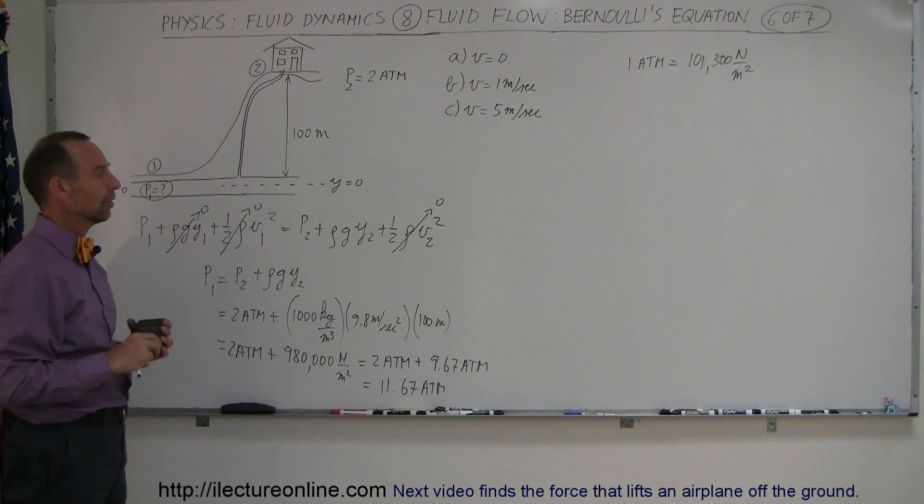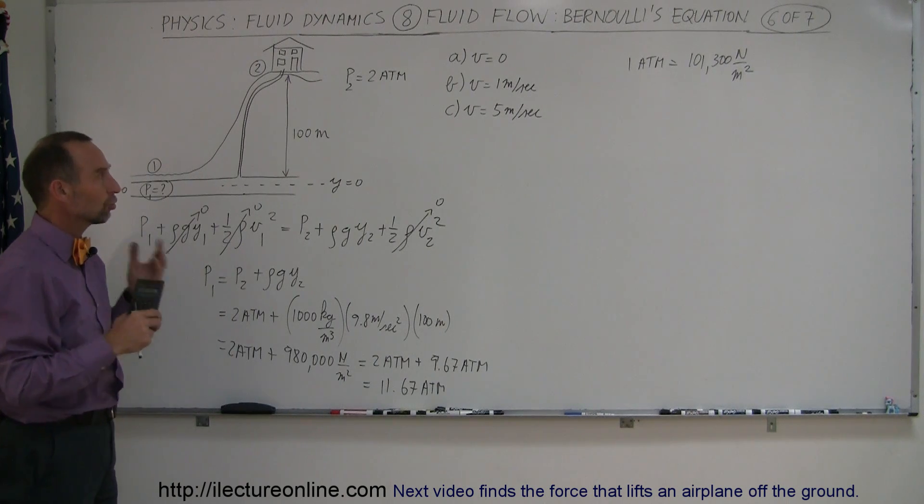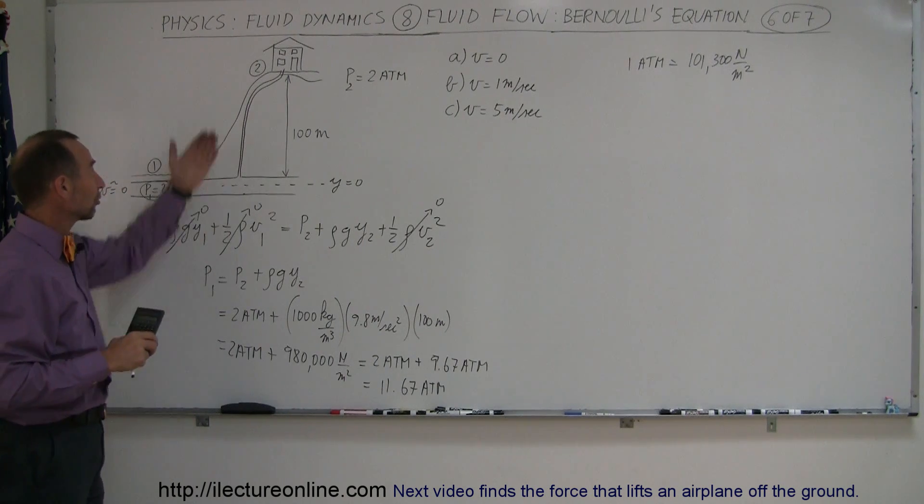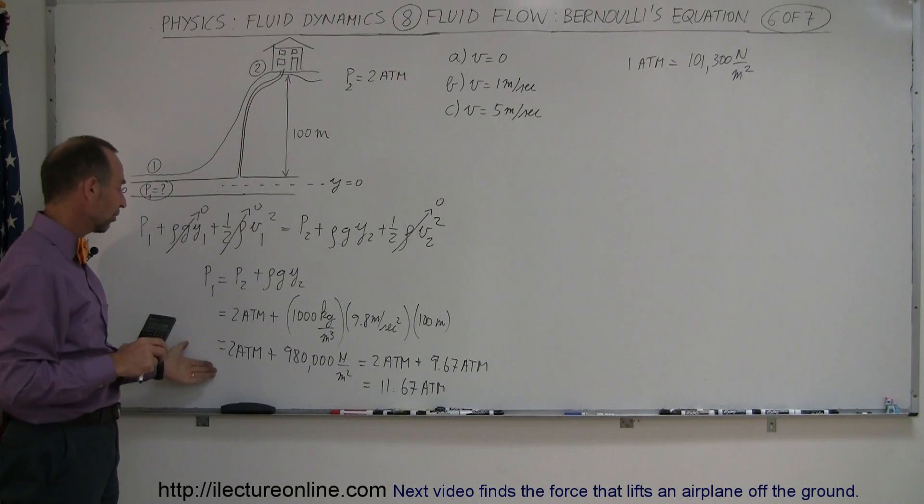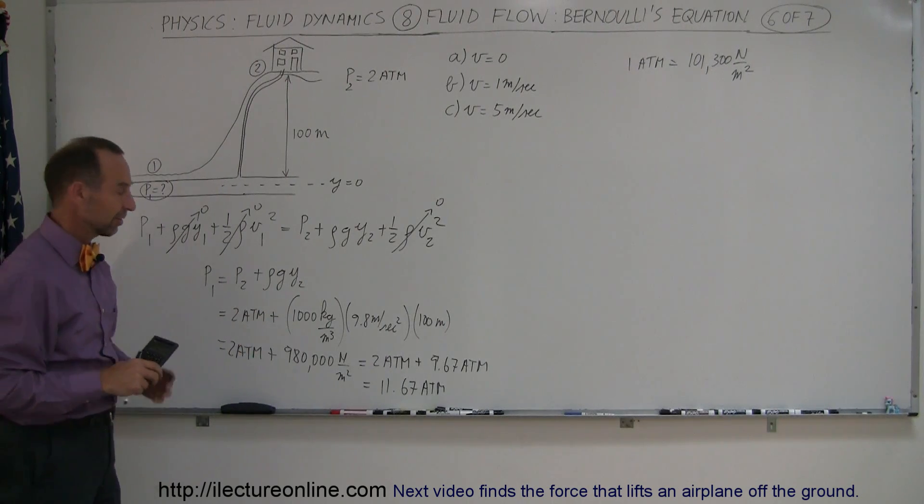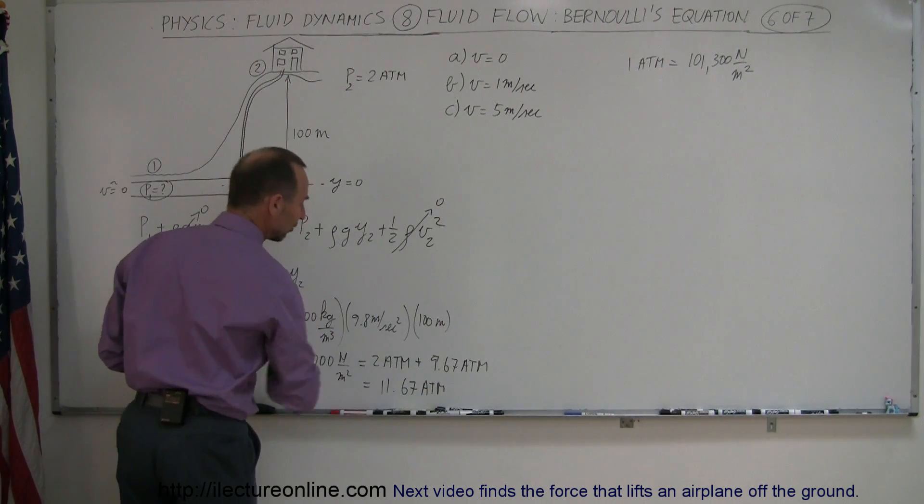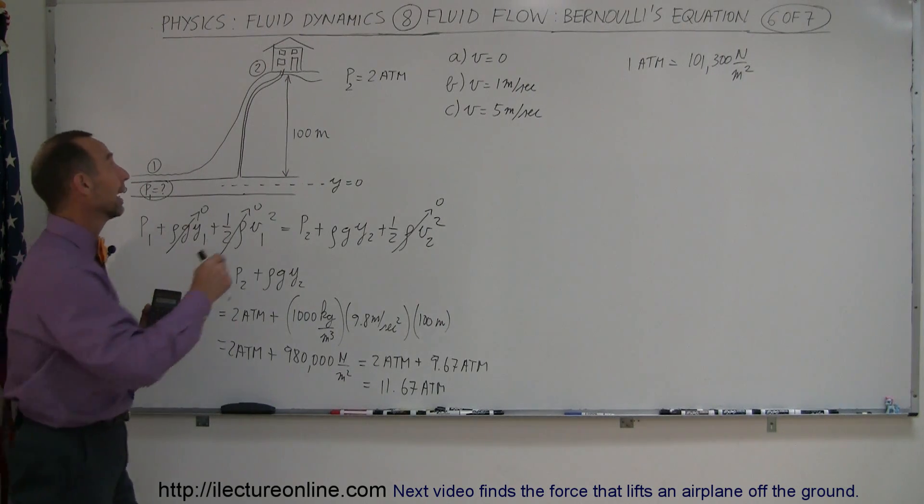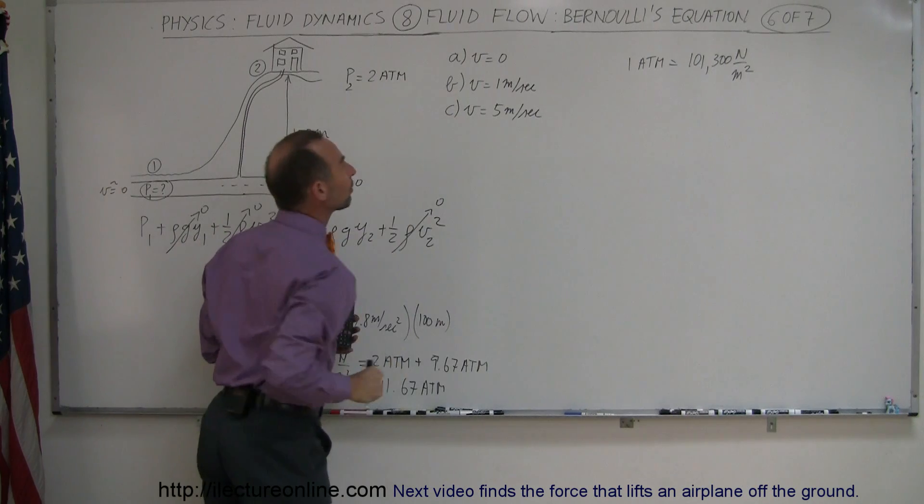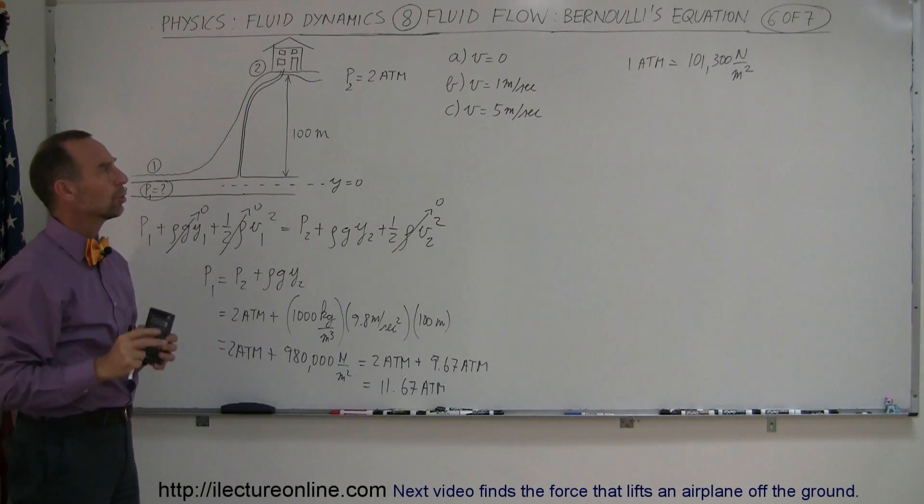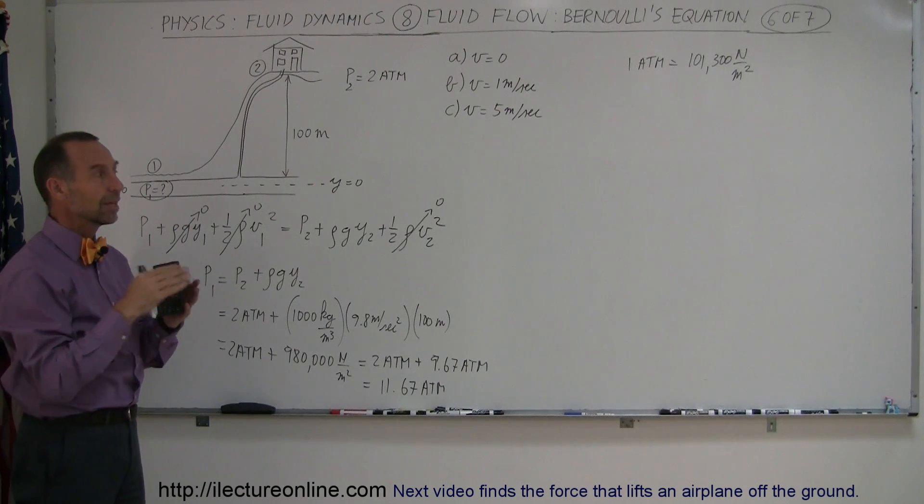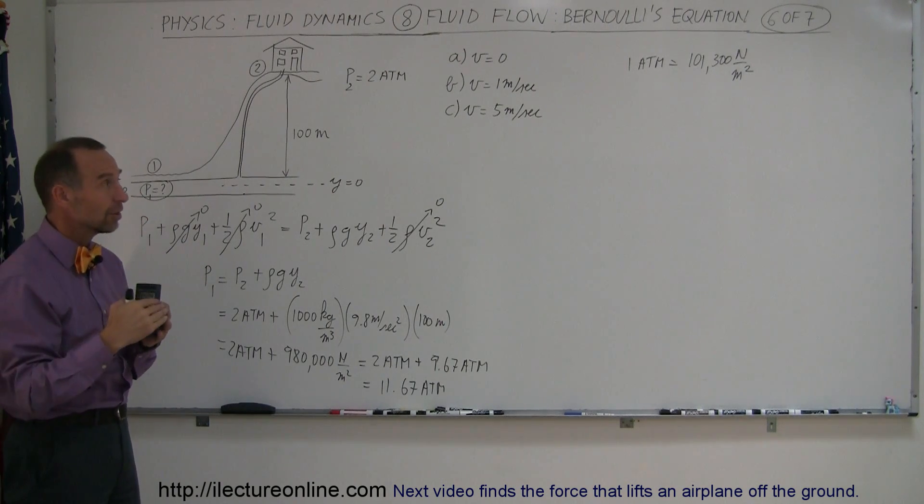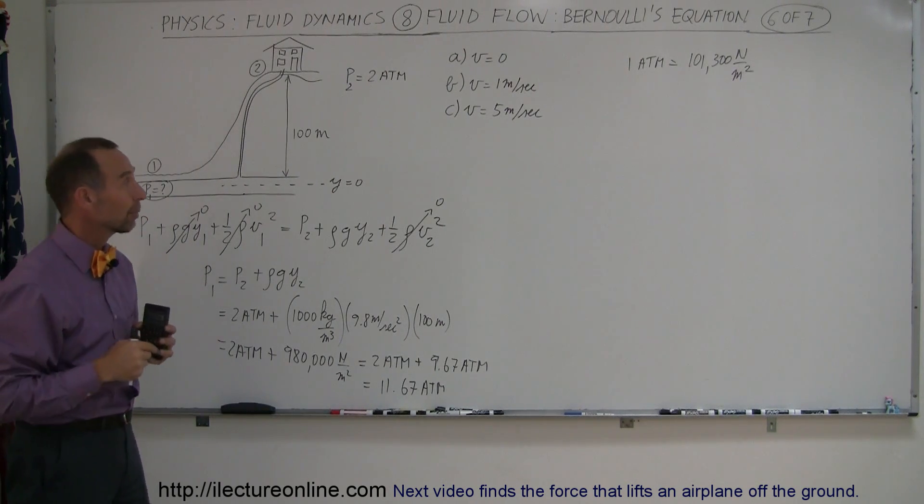All right, so let's say that's the situation, there's no water being used, the pressure up there is now two atmospheres, the pressure down here is 11.67 atmospheres. Let's say that this doesn't change, but now the person in the house begins to use the water, and water begins to flow through the pipe at one meter per second. What will that do to the pressure? Well, if the velocity increases, that means the pressure will decrease, and so let's find out the decrease of the pressure.